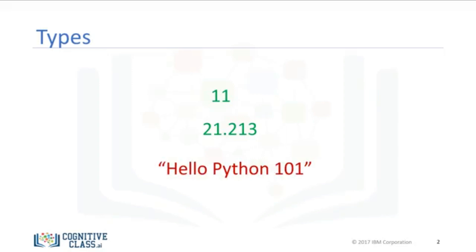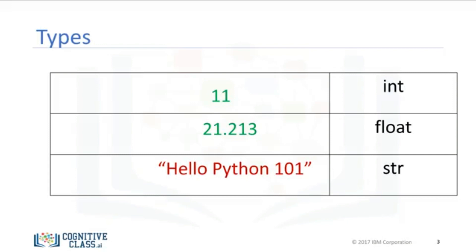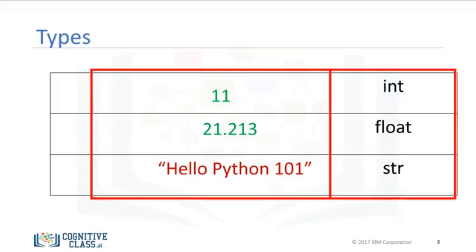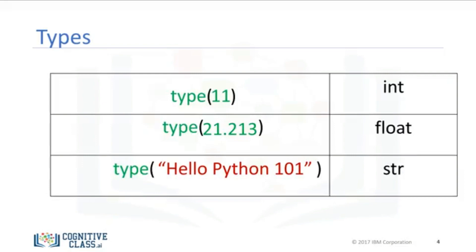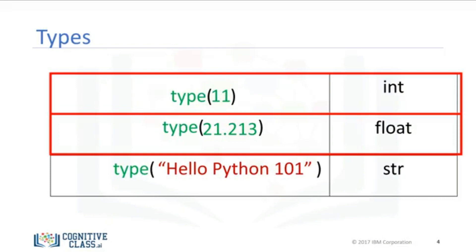The following chart summarizes three data types for the last examples. The first column indicates the expression, and the second column indicates the data type. We can see the actual data type in Python by using the type command. We can have int, which stands for an integer, and float, that stands for float, essentially a real number. The type string is a sequence of characters.